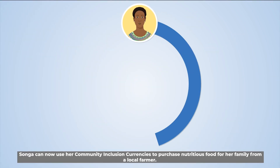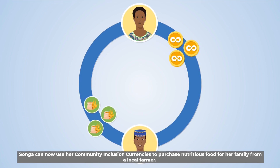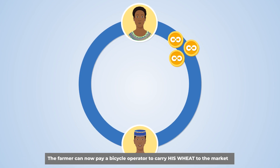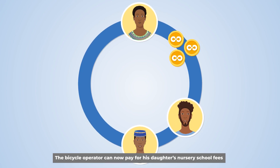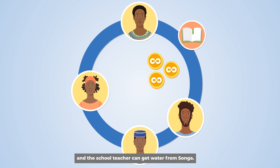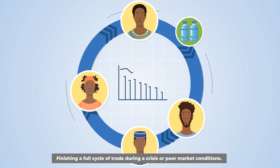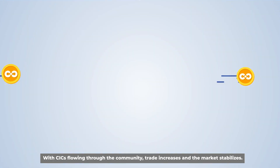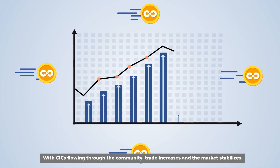Songa receives Community Inclusion Currency Credit as shares of the Community Fund. Now she can meet her basic needs by trading with other community members using her simple phone. Songa can use her Community Inclusion Currencies to purchase nutritious food for her family from a local farmer. The farmer can now pay a bicycle operator to carry his wheat to the market. The bicycle operator can now pay for his daughter's nursery school fees. And the school teacher can get water from Songa, finishing a full cycle of trade during a crisis or poor market conditions.